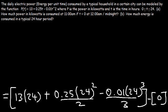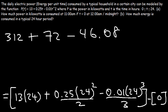Let's take this one step at a time. So 13 times 24 is 312. 24 squared is 576 times 0.25 divided by 2, so that's going to be positive 72. 24 to the third power is 13,824 times 0.01, and then divided by 3, that's going to be 46.08. So if we combine these three values, the answer is 337.92.